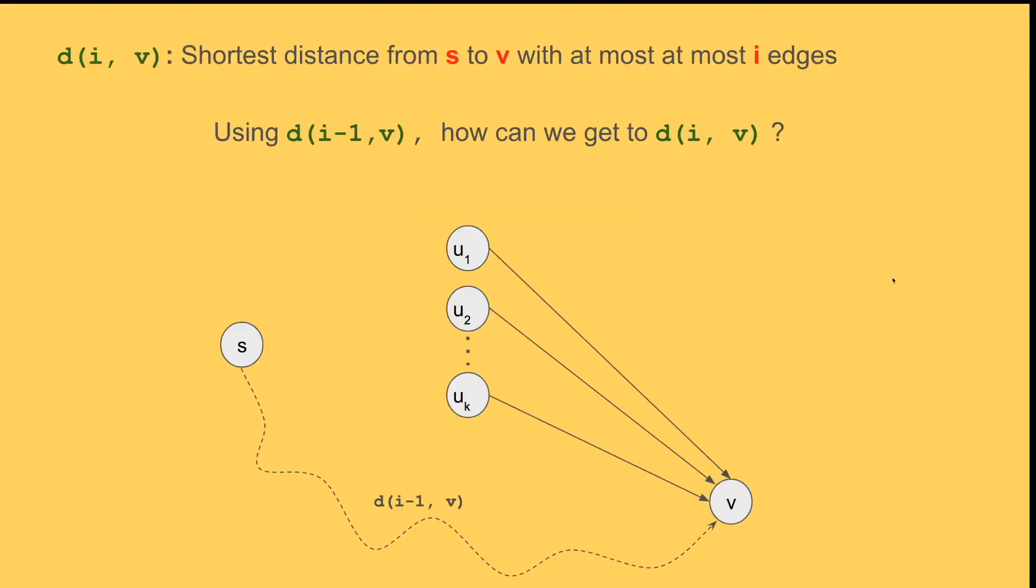Now let's see what would be the general case of this. You can write d as a function, which would be shortest distance from node source to node v using at most i edges, d(i,v). And we want to find out using d(i-1,v), which is this path that I'm showing here, can we get to d(i,v)? Basically write this as a recursive function when at each step we get the i minus one and v, and then we find the i and v.